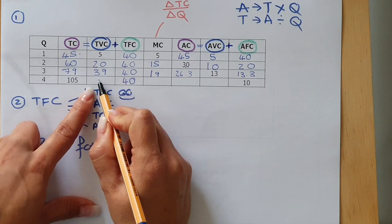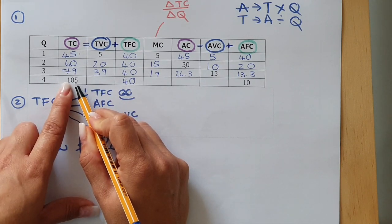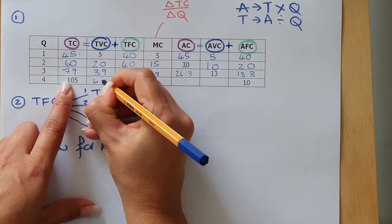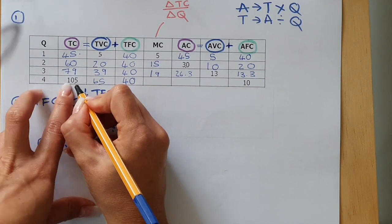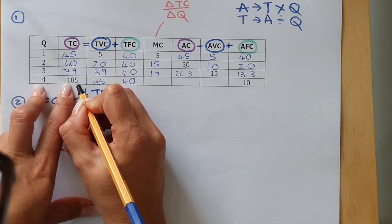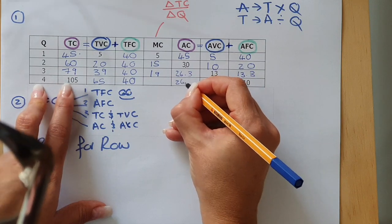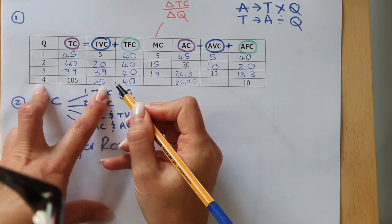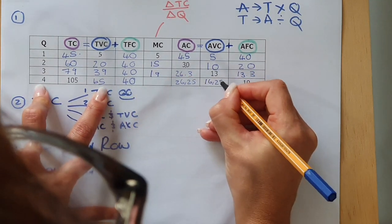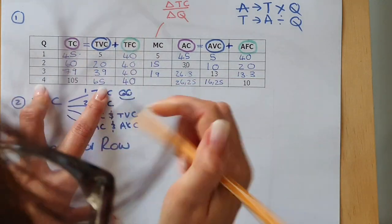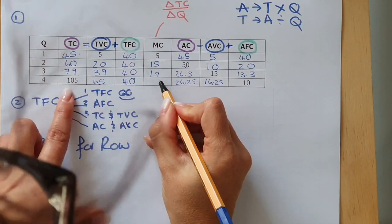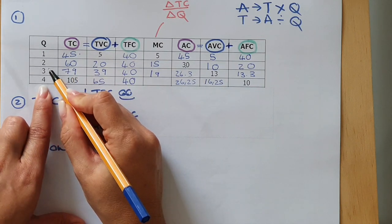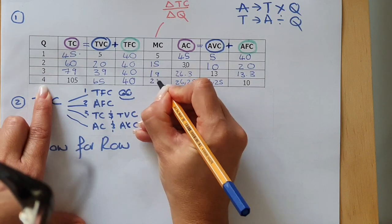For row 4, Total Variable Cost is given as 65 — wait, Total Cost is 105. So 105 is the answer. 40 plus what gives 105? That's 65 for Total Variable Cost. Average Cost: 105 divided by 4 is 26.25. Average Variable Cost: 65 divided by 4 is 16.25. Average Fixed Cost is provided. Marginal Cost: 105 minus 79, divided by 4 minus 3, gives 26.